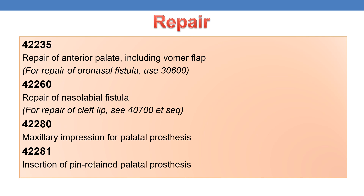The next CPT, 42235, deals with repair of anterior palate including vomer flap. For repair of oronasal fistula, use 30600. CPT 42260 deals with repair of nasolabial fistula. For repair of cleft lip, refer to the CPT range 40700 sequence.